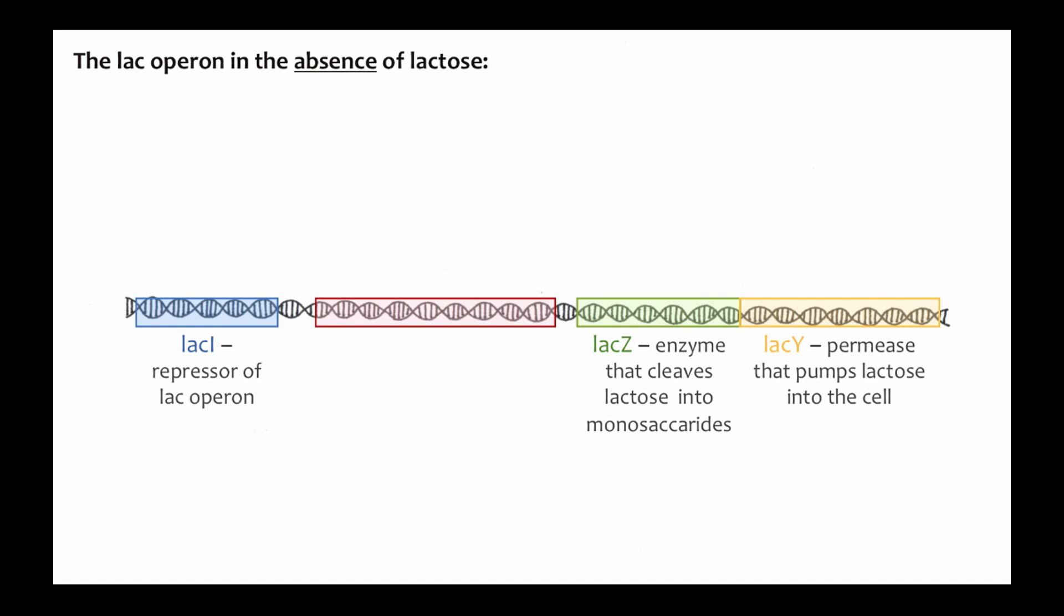Lac Z and Lac Y are controlled by cis-regulatory regions upstream of the operon. This region contains a promoter, where RNA polymerase can bind, and a control region, to which the lac repressor can bind.